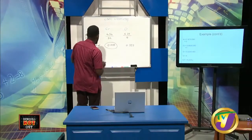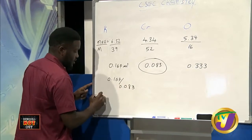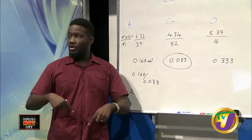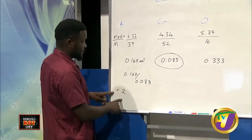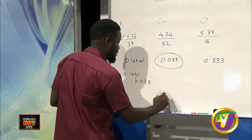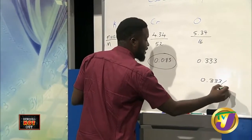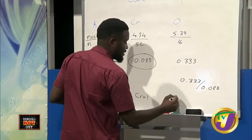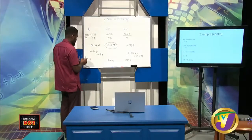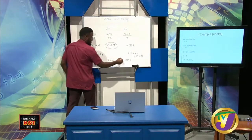Dividing by 0.083: potassium = 0.167 ÷ 0.083 ≈ 2 (round down). Chromium = 0.083 ÷ 0.083 = 1. Oxygen = 0.333 ÷ 0.083 ≈ 4. Remember: if the number falls below five, round down; above five, round up. So potassium is 2, chromium is 1, and oxygen is 4.